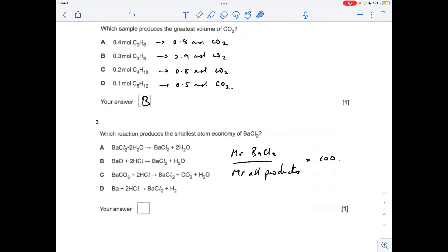Moving on to number three. Percentage atom economy is the MR of the desired over the MR of all the products, or you can go MR of all the reactants. I think for this one it's easier to do product, obviously times 100. Now you don't have to work out all the individual answers, just think about if the bigger this is, the bigger this denominator is, the smaller the final answer is going to be.